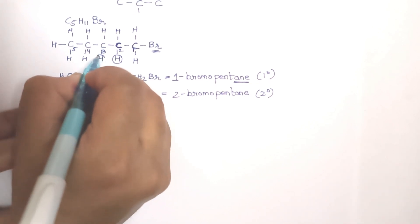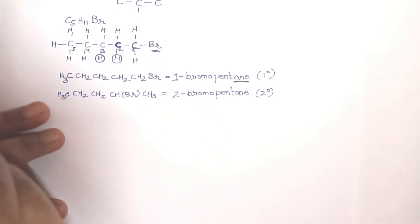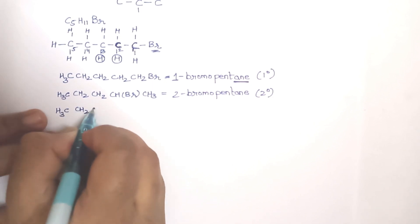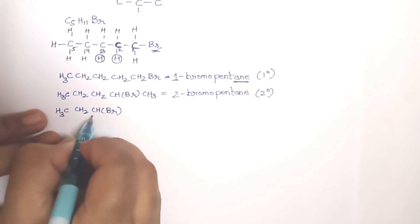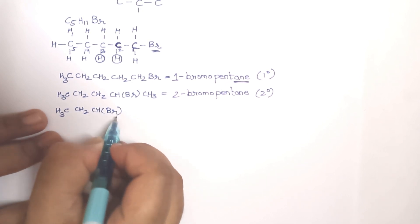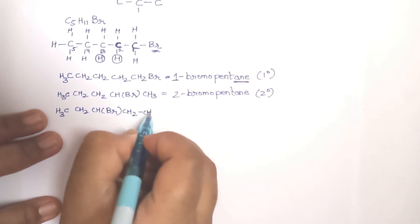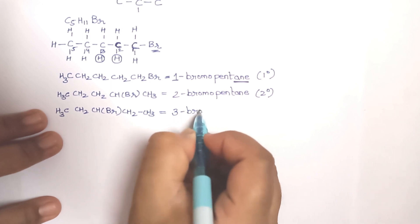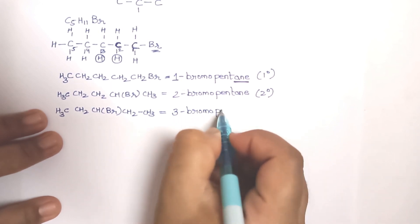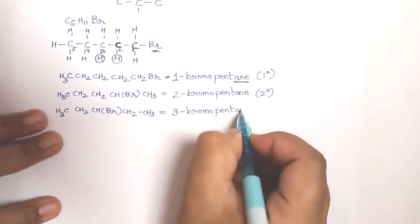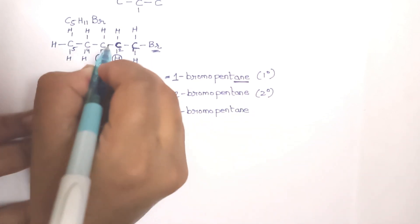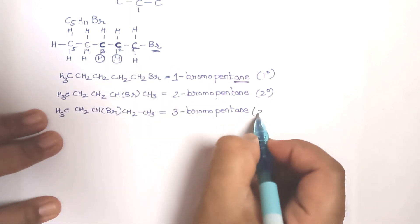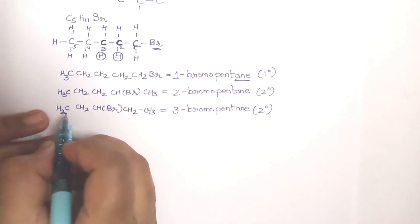For the third structure, we replace the hydrogen on the third carbon with bromine: CH3-CH2-CHBr-CH2-CH3. The position of bromine is third, so 3-bromo, 5 carbon atoms so 'pent', all single bonds so 'ane' — giving 3-bromopentane. This carbon is also attached to two other carbons, so it is also a secondary compound.